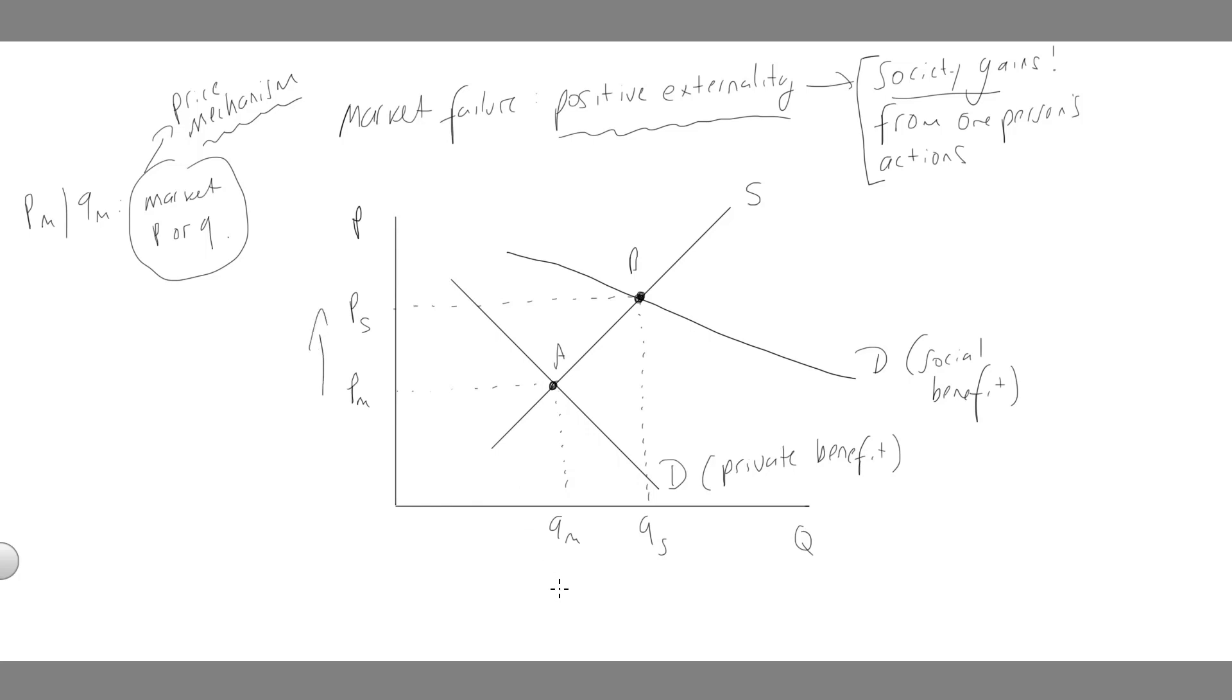So price should be higher, production should go up, and society would get the benefit of this positive externality.